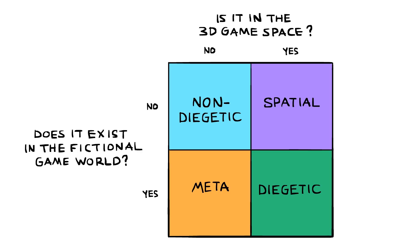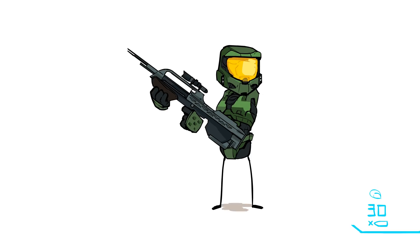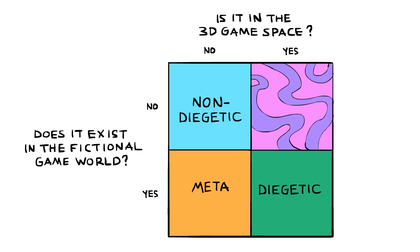As this excellent chart from Eric Fagerholt and Magnus Lorentzen shows, there are four ways we can do game UI. Diegetic — such as Halo 3's ammo displays mounted on the guns — and non-diegetic, having the ammo count flat on the edge of the screen. But games also have a weird hybrid.